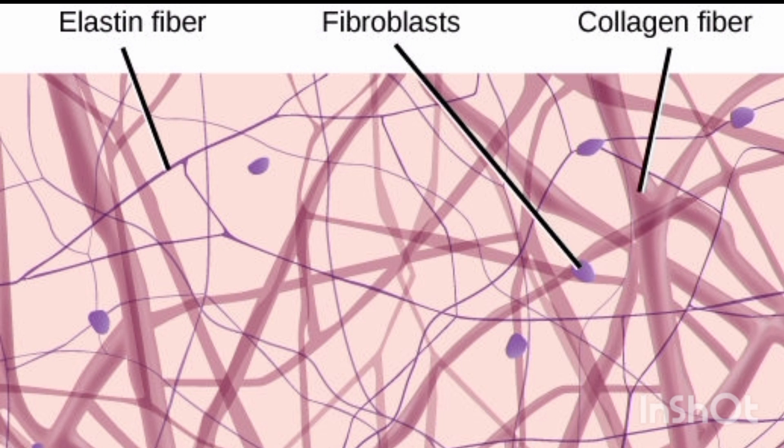All three basic components of connective tissue — cells, fibres, and ground substance — are best represented in the loose connective tissue. The two most common cell types include fibroblasts and macrophages, but many mast cells and adipocytes are also present.